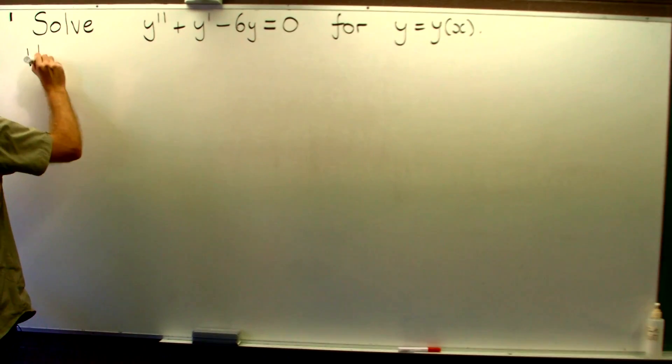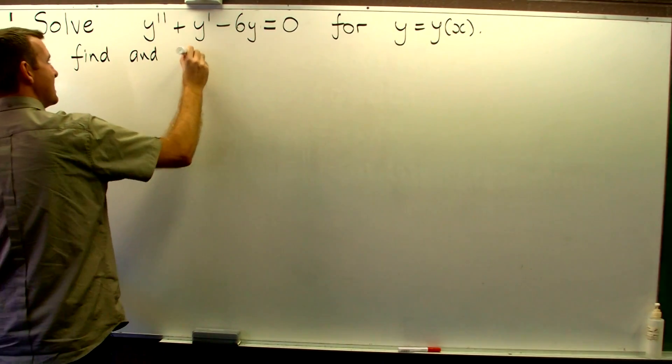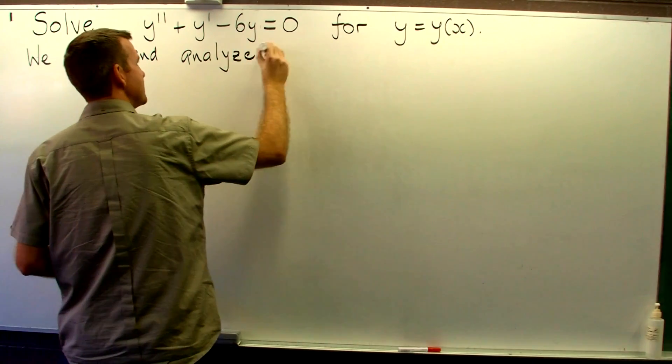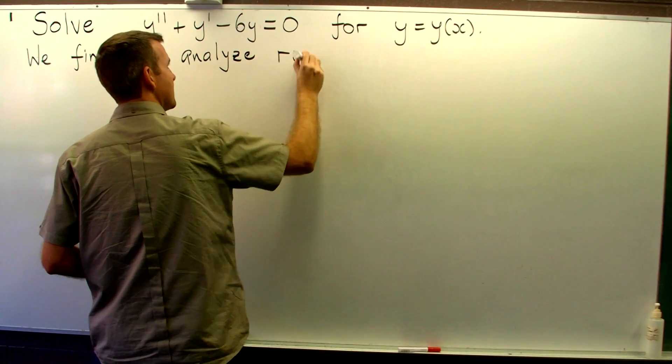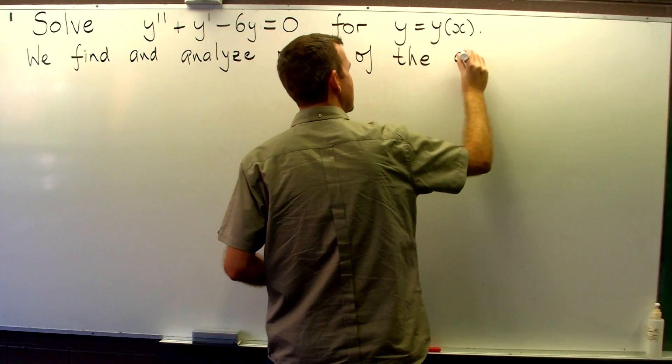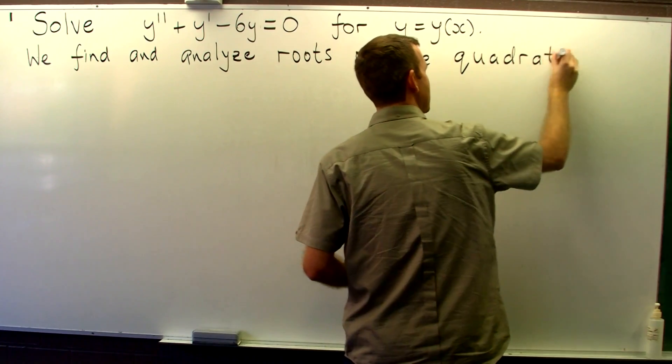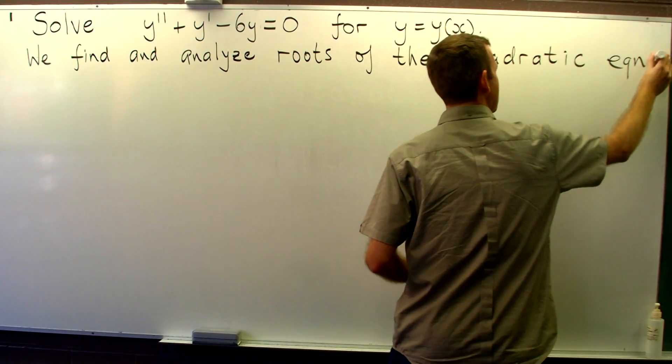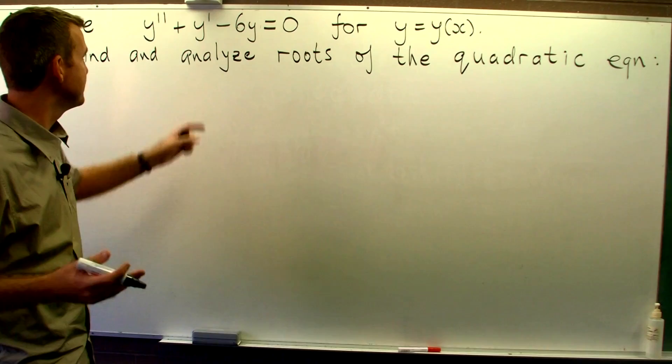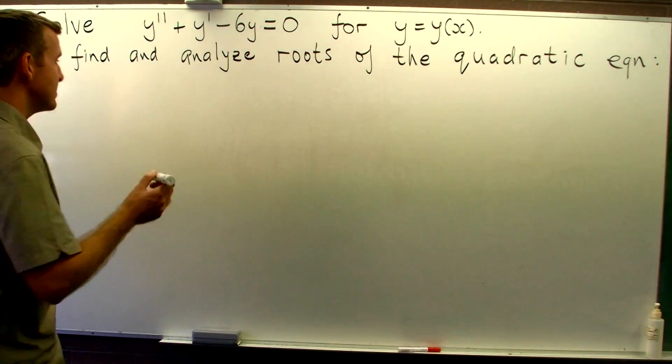So we find and analyse the roots of the following quadratic equation. And the quadratic equation is determined from the coefficients in here, from our ordinary differential equation.